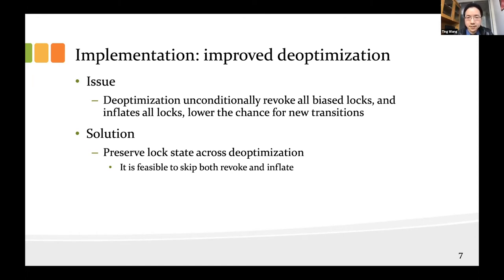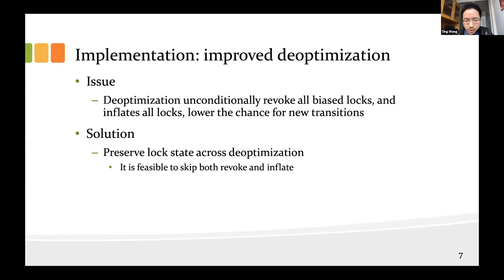This has something related to our second improvement, which happens in de-optimization. De-optimization is a process to throw away some assumptions made during JIT compilation. It happens typically in workloads, and during de-optimization the process unconditionally revokes all bias locks and inflates all those locks to the heavyweight state. That state is not good for bias locking. We looked into de-optimization handling and found that it is feasible to preserve the lock states across de-optimization. Two main factors: first, garbage collection is guaranteed not to happen during de-optimization; second, we found a comment in the OpenJDK source code mentioning a way to skip the inflate.